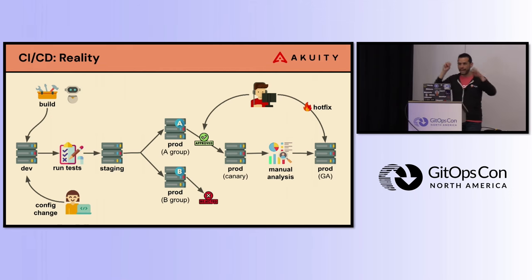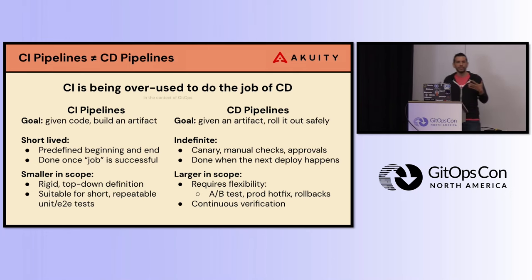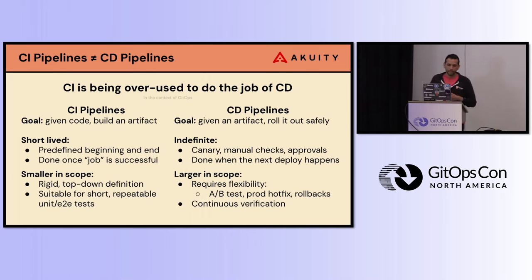We tend to think of it as a linear process, but it's actually more fragmented than that. In the context of GitOps, CI is being overused to do the job of CD. CI has a specific goal: given some code, build an artifact out of it. The idea is that CI processes are short-lived — a one-and-done job that happens during the process, really smaller in scope, with a top-down definition, suitable for end-to-end repeatable unit tests.